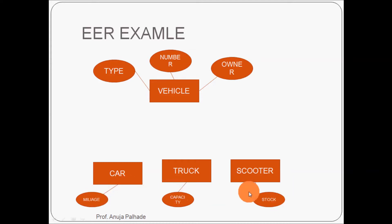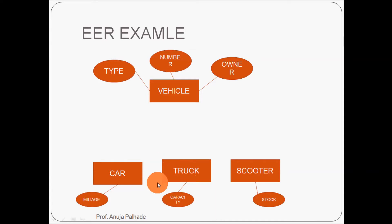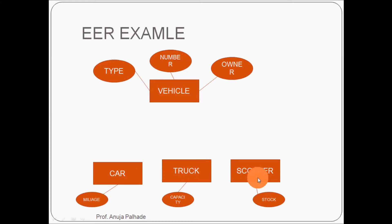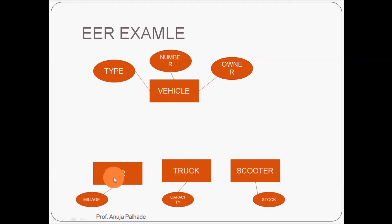These are the own attributes of the scooter entity and truck entity. Not every vehicle has capacity — so these are individual attributes. Vehicle is the superclass, and from this superclass we extract the disjoint truck entity, disjoint scooter entity, and disjoint car entity. So vehicle is the superclass and these are the subclasses.